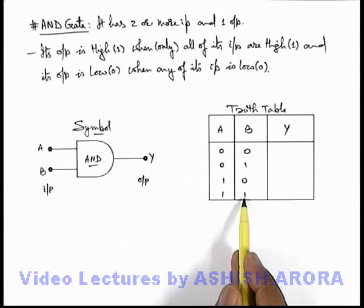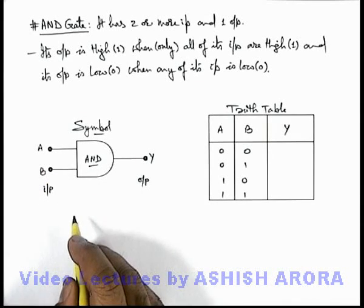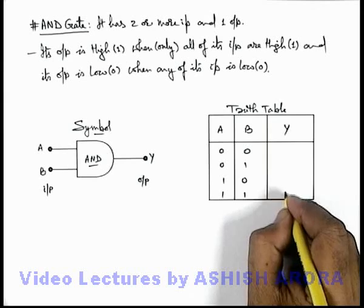That is only the fourth combination in which both A and B are having high voltage, so in this situation the Y will be high.